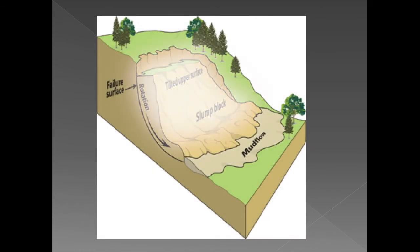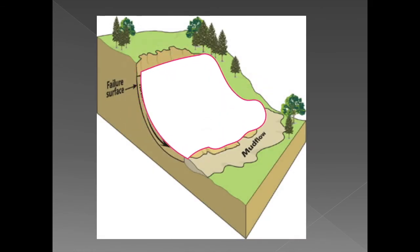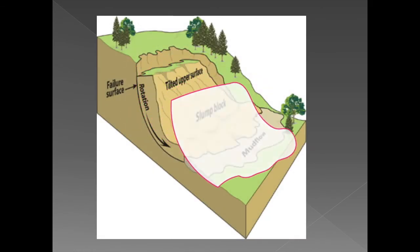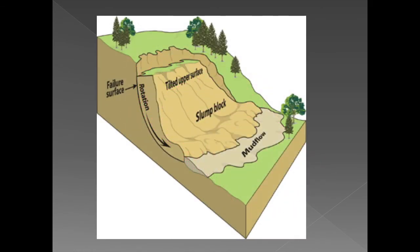Look at this example here. The ground becomes saturated, it slumps down and then pushes forward — there you get the rotational movement. You can see that the area of rotation is the area of fracture where the break occurred.